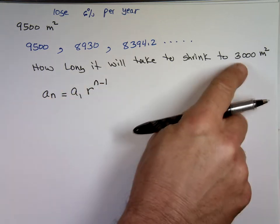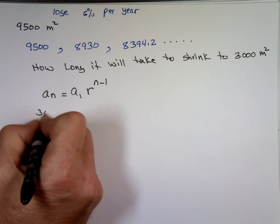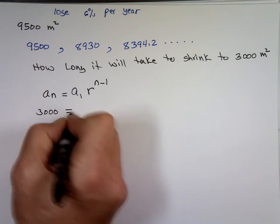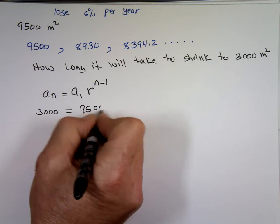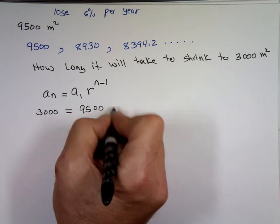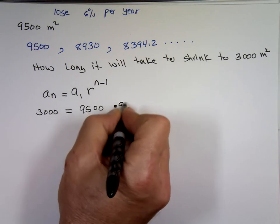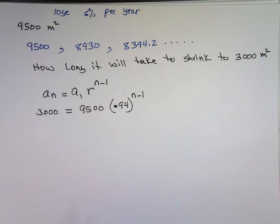A_N equals A1 R to the power of N minus 1. I'm telling you what that number is going to be there. 3,000. I know what the initial value is, what? 9,500, right? R, which is what? 0.94. To the power of what? N minus 1. I picked this intentionally. I changed the question for a reason, because I want to see if you remember your stuff from two weeks ago. What kind of equations do you have here? A log. That's an exponential equation. The only way to solve it is by using the log or the natural log. Absolutely. Then you move the exponent. Yep. So first thing first. Yep, exactly. You're going to divide both sides by 9,500.